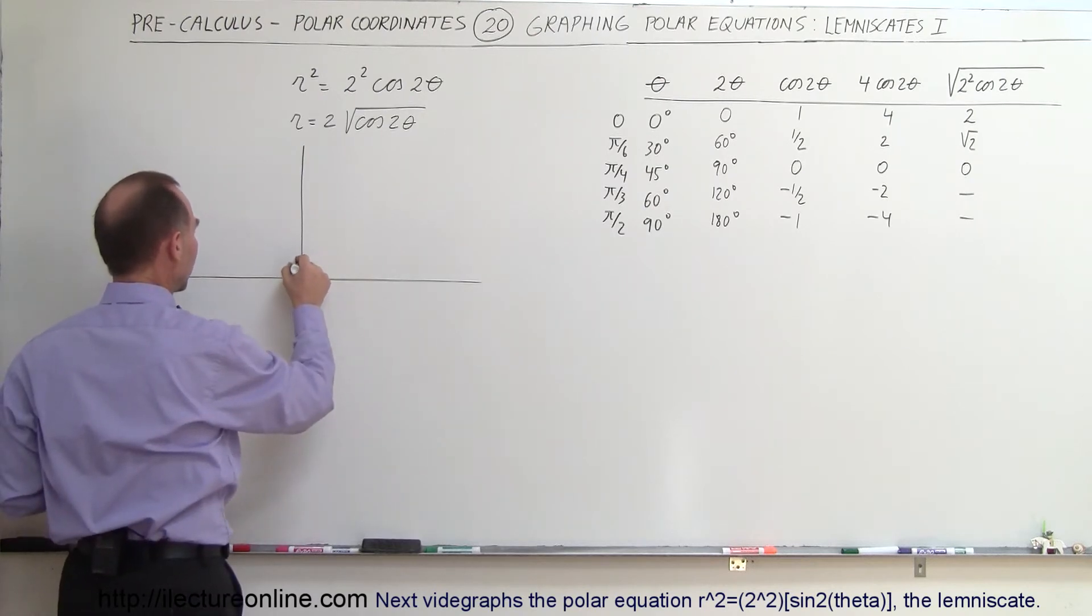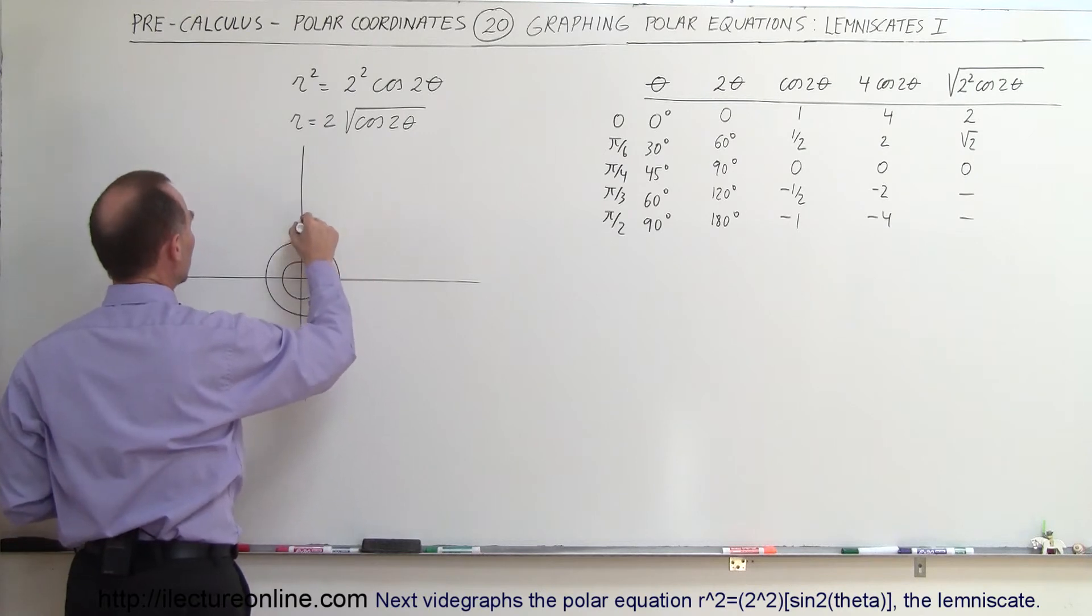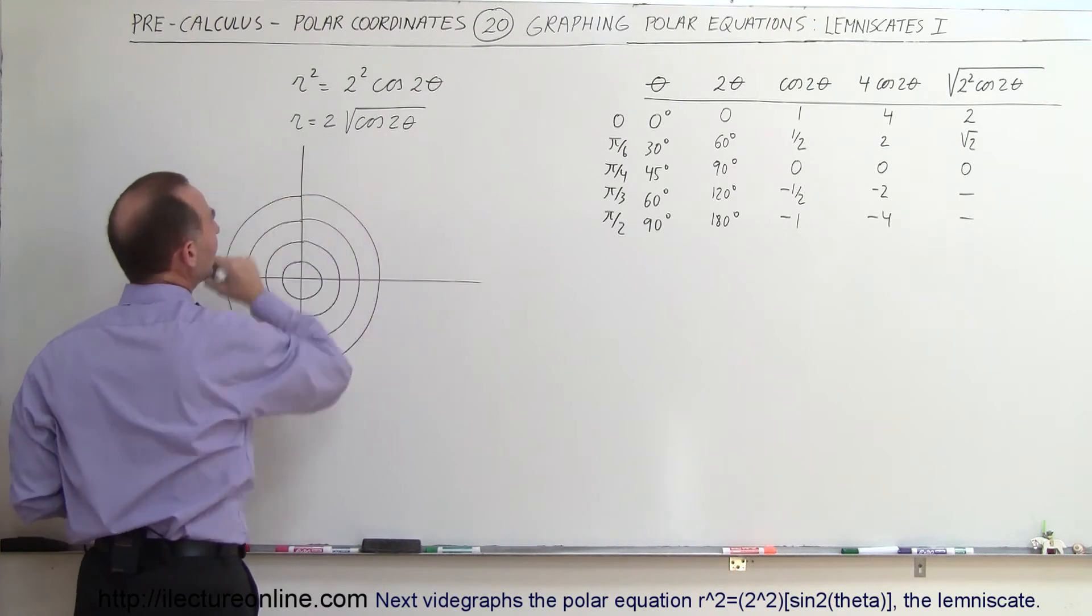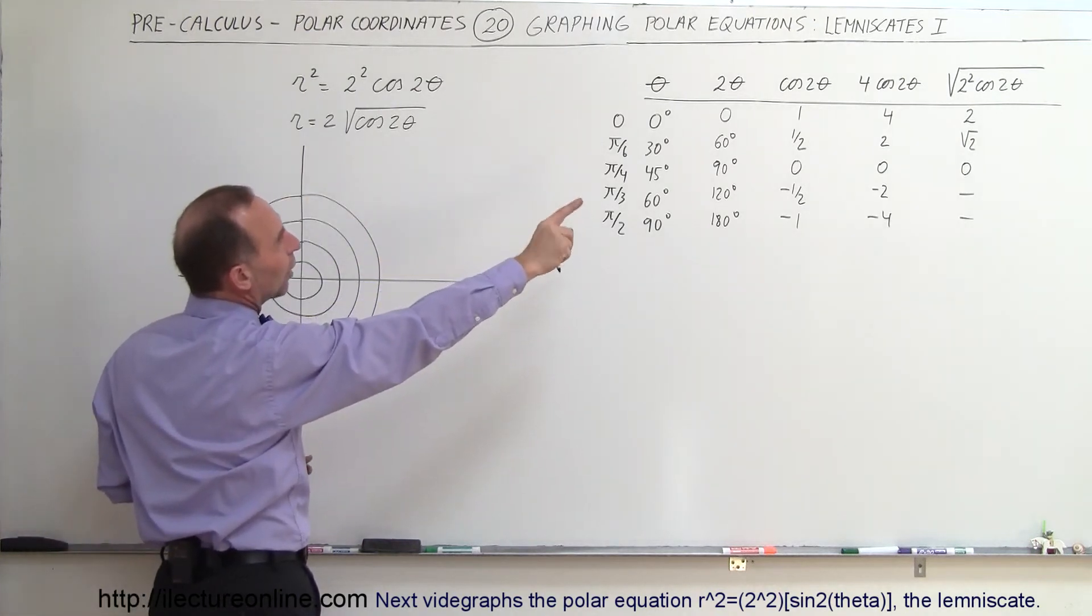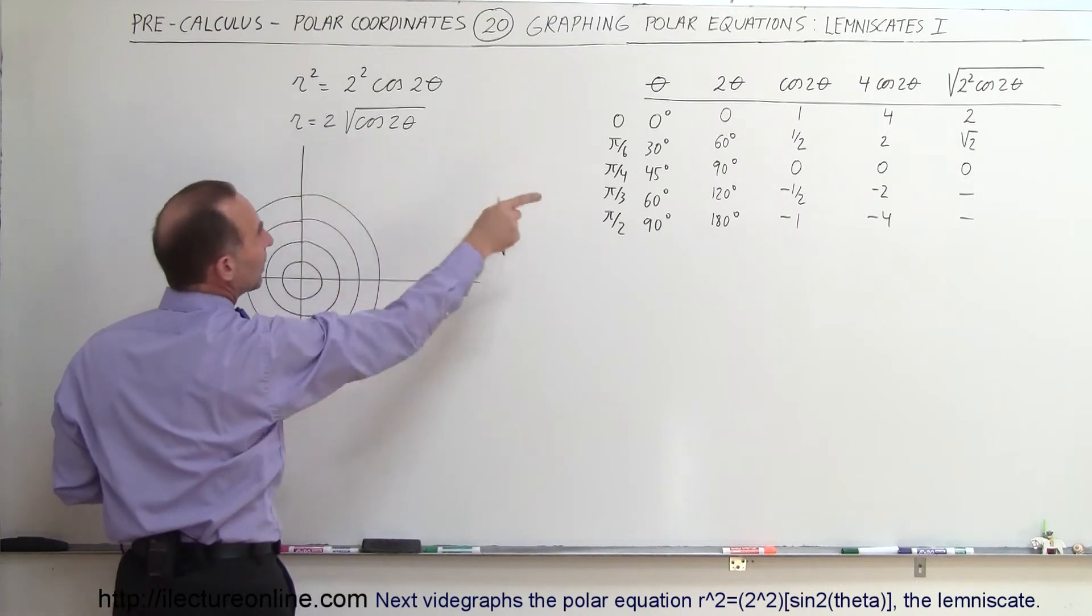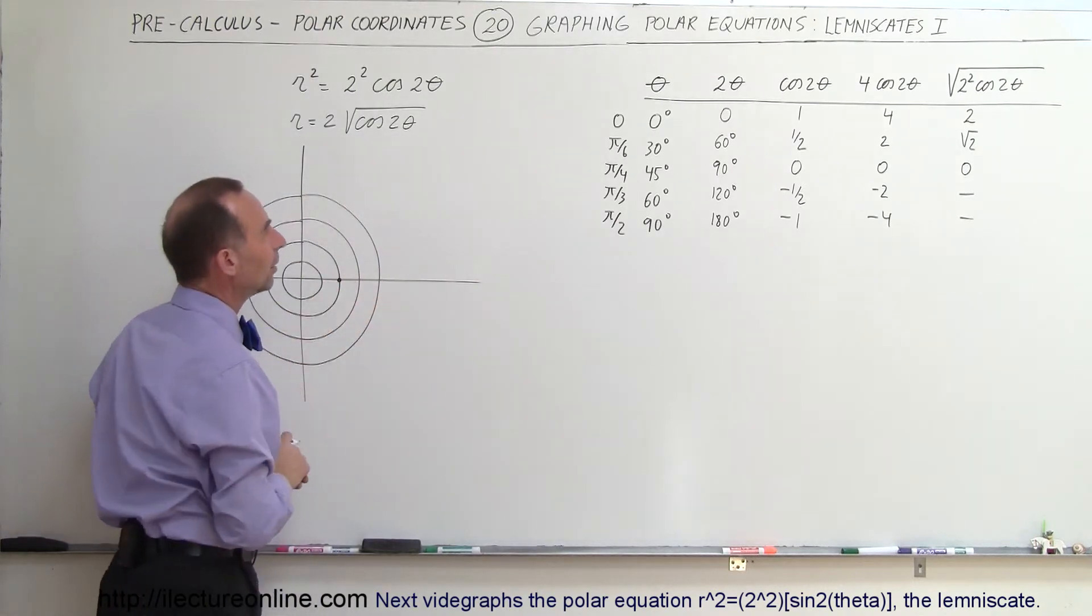So let's go find out what those values are. We might as well draw some little circles around there for r equals 1, r equals 2, r equals 3, and r equals 4. Alright, so when the angle is 0 degrees, you can see that the square root of that function, r, would then be equal to 2. So that would be this value right there.